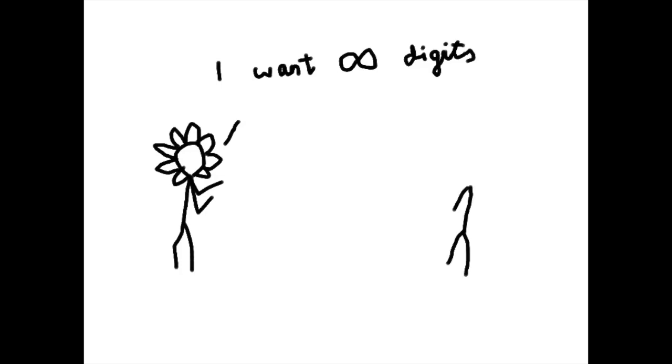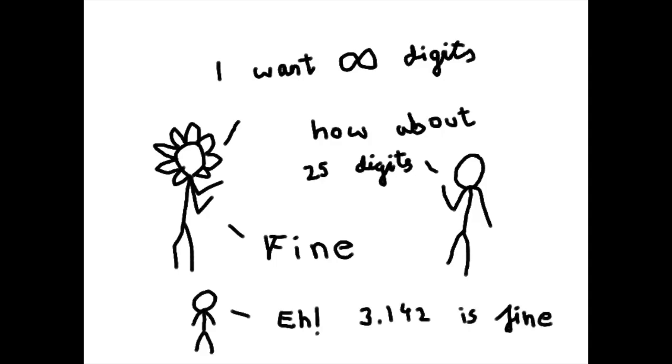All of this reveals that even the most stubborn scientists would not need any more than say 25 digits of pi to do anything and chances are you'll never need more than 3.142.